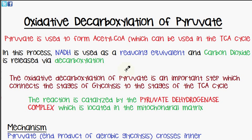In the process of the decarboxylation of pyruvate, NADH is used as a reducing equivalent. NADH is an electron carrier, and carbon dioxide is released via a process known as decarboxylation, which means the removal of a carbon.